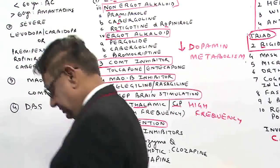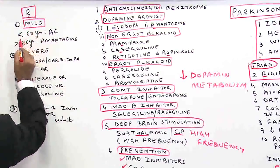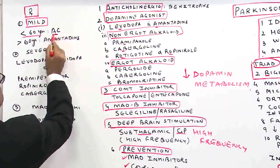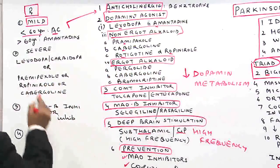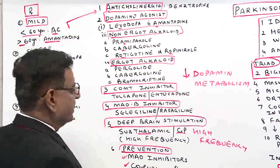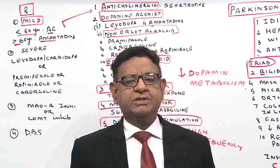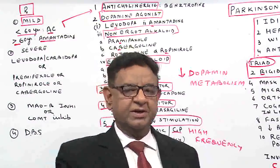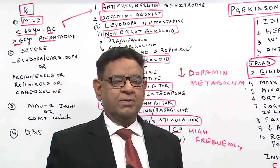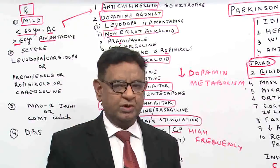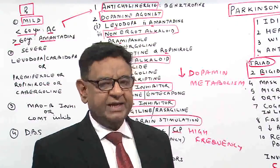Now, how to treat a case of Parkinsonism. If a patient has mild disease and is below 60 years, you use anticholinergic drugs. In elderly persons above 60 years, you use amantadine. The reason we do not use anticholinergics in the elderly is that they have strong side effects like constipation, dryness of the mouth, and urine retention — problems that are already present in elderly persons due to age. We do not want to aggravate the symptoms.